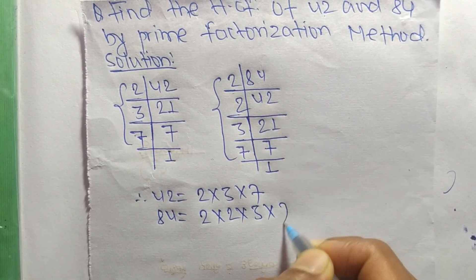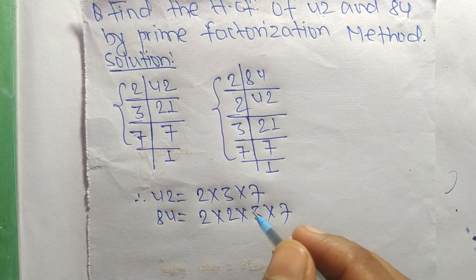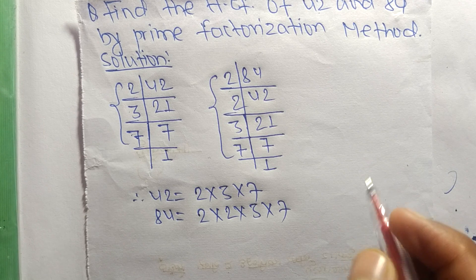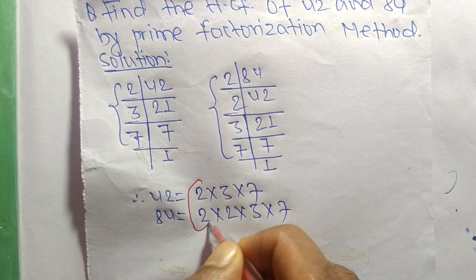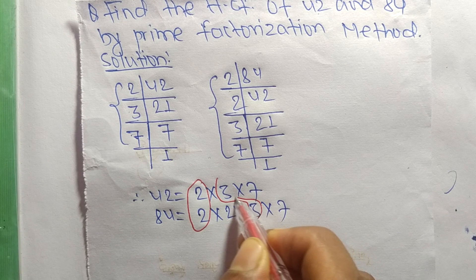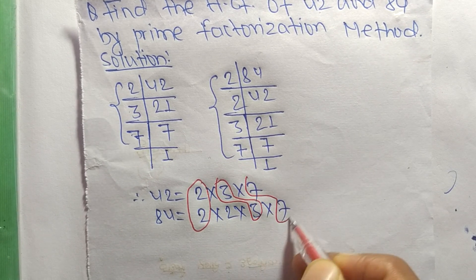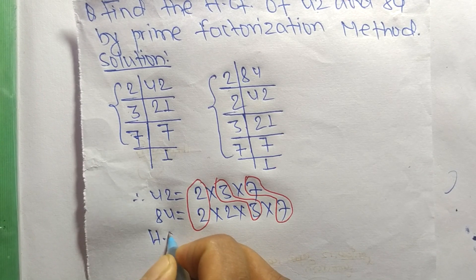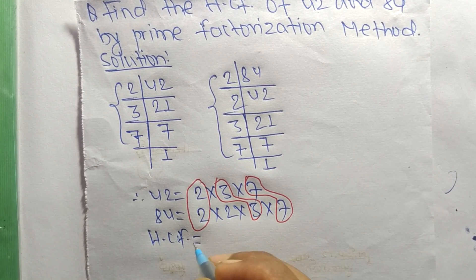So now from these prime factors we select the common factors. The first common factor here is 2, second common is 3, and third one is 7. So now the HCF is equal to the product of these common factors which are 2, 3, and 7.